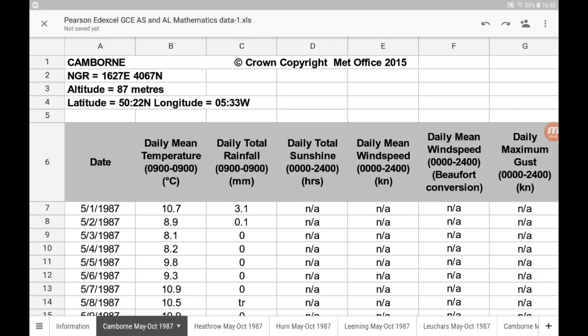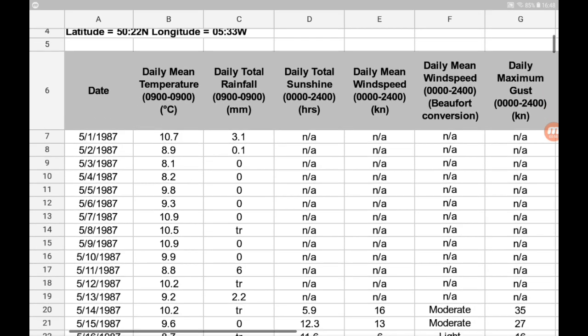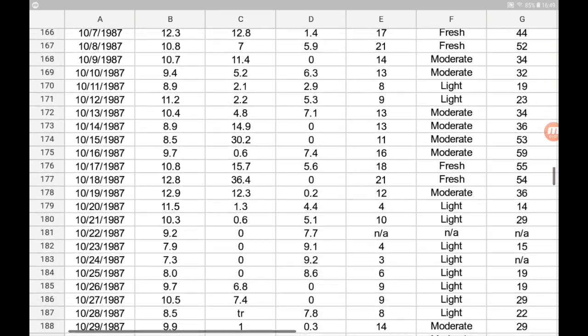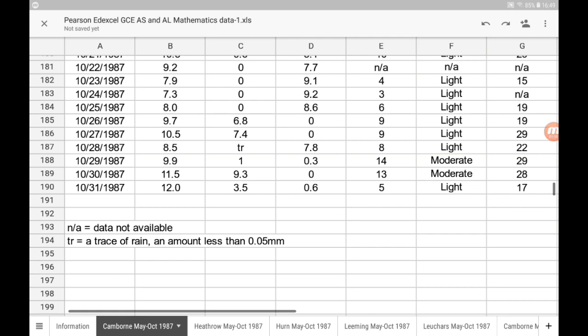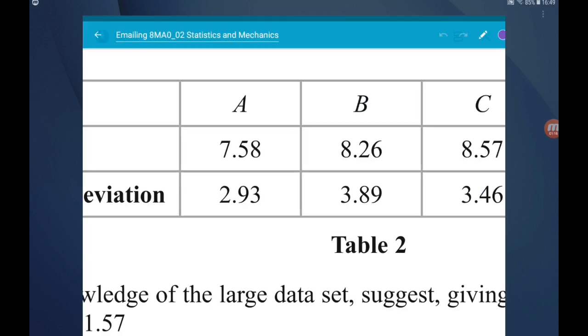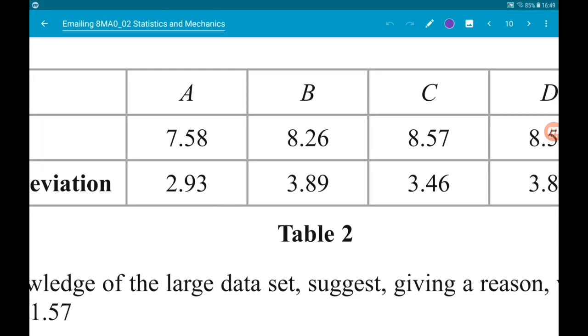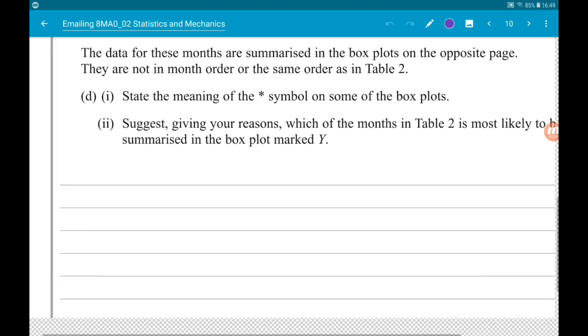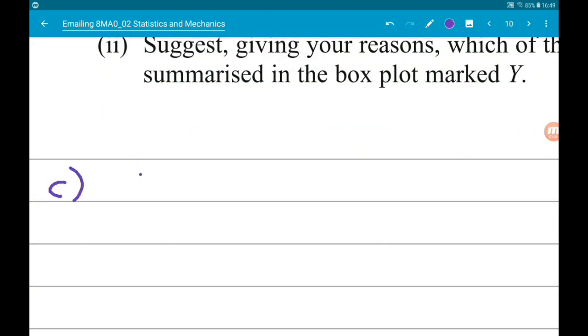So if we look at the means, 11.57 is the largest mean. So if we go to the large data set, here it is. Notice the dates in the left-hand column start with the fifth month, so May, and we end on the tenth month, so October. So October is the most wintry month between May and October, so it's likely this one would have been October.